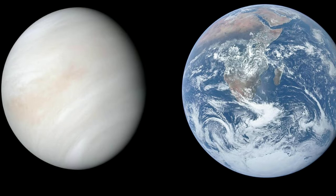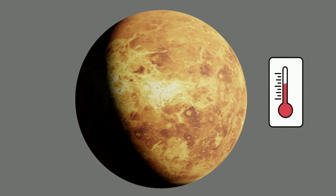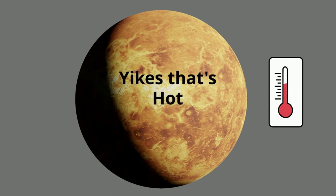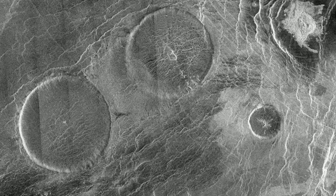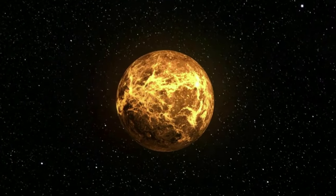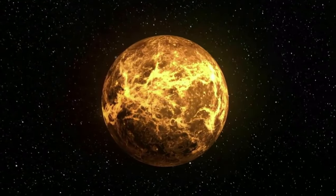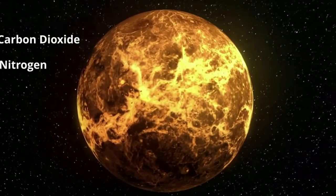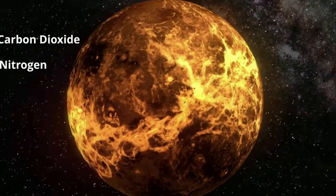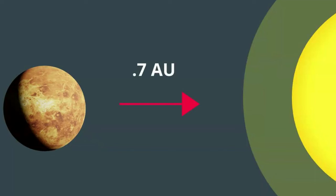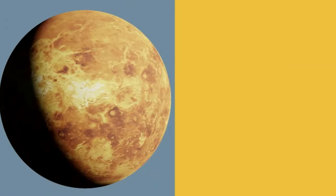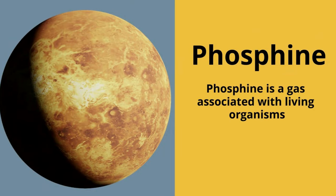Venus is slightly smaller than the Earth and is the hottest planet in our solar system. Surface temperatures on Venus are around 900 degrees Fahrenheit. The surface is a rusty color and has mountains and thousands of large volcanoes along with dust. The air pressure is roughly 90 times greater than Earth's due to its thick atmosphere, which is composed of 96% carbon dioxide and 4% nitrogen. The carbon dioxide traps heat and causes the extreme temperatures. Venus is 0.7 AU from the Sun. The recent detection of phosphine in Venus's atmosphere has caused scientists to rethink whether life may exist there.